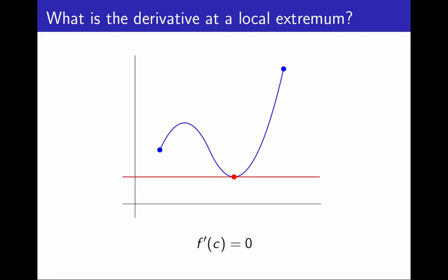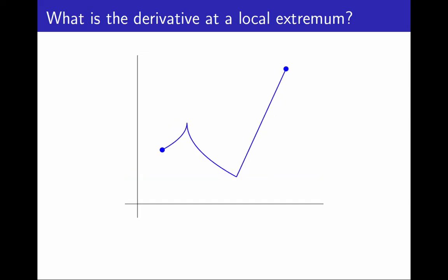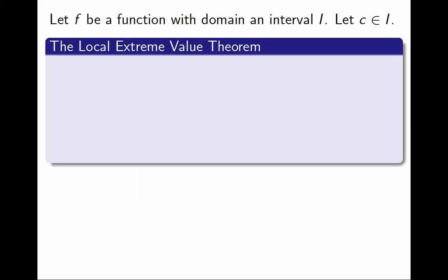Well, not always. Here is the graph of a function that has a local maximum and a local minimum, but it does not have derivative zero at those points, because it has corners at those points, and the derivative does not exist. That seems to be the only two options, and that is what the local extreme value theorem says.